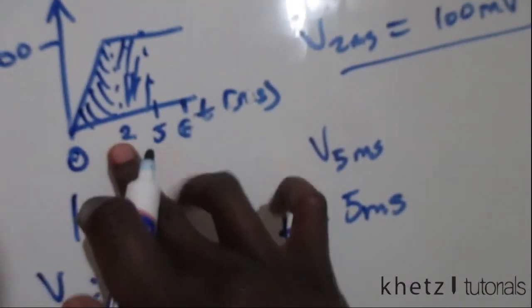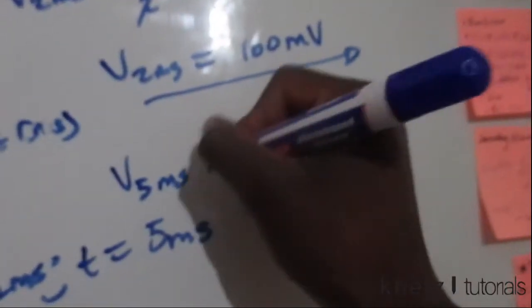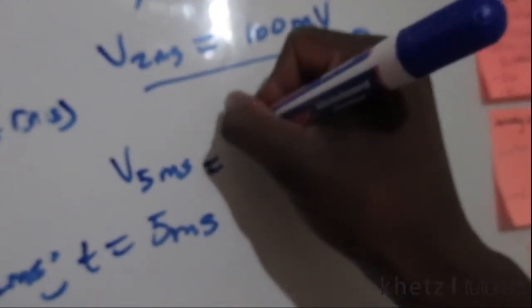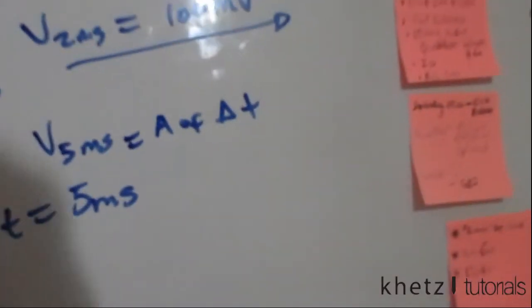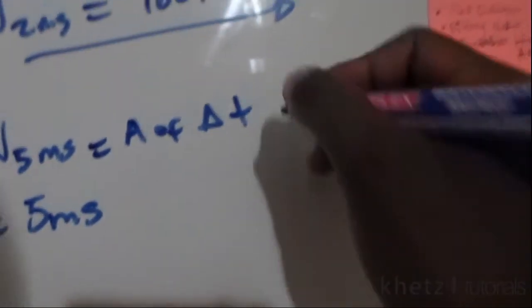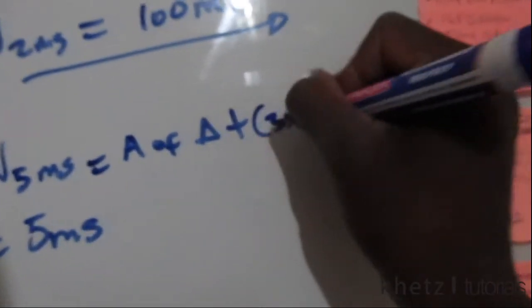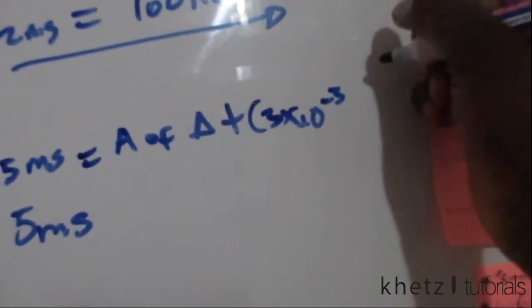So you're going to have the area of the triangle plus the area of our new shape, which is going to be three times 10 to the minus three, multiplied by 100, which is going to be 300 millivolts.